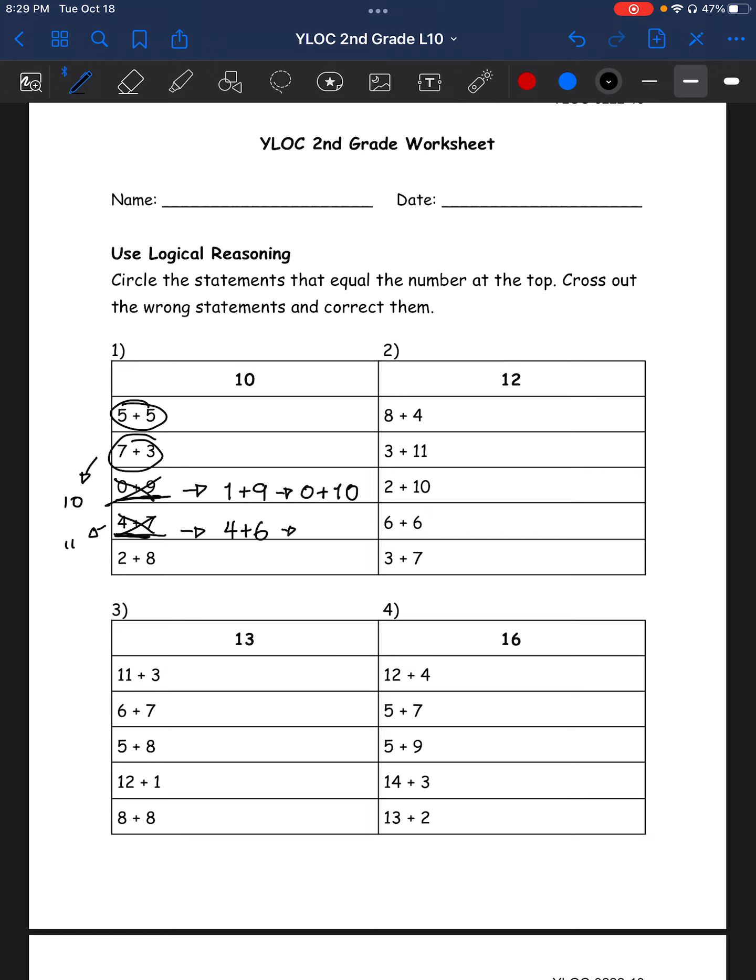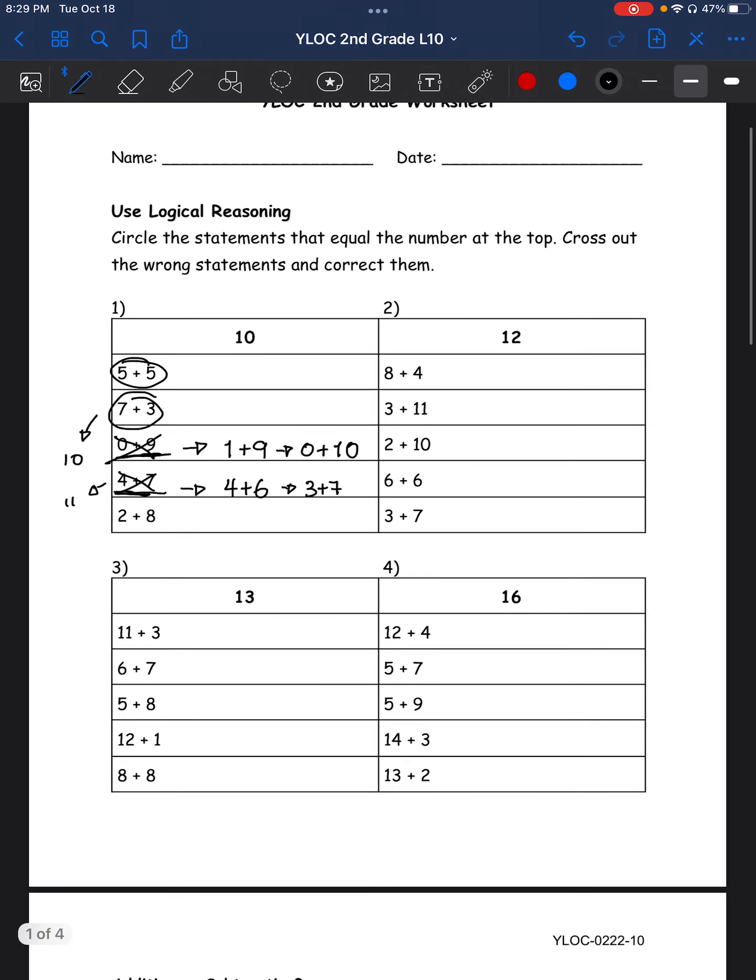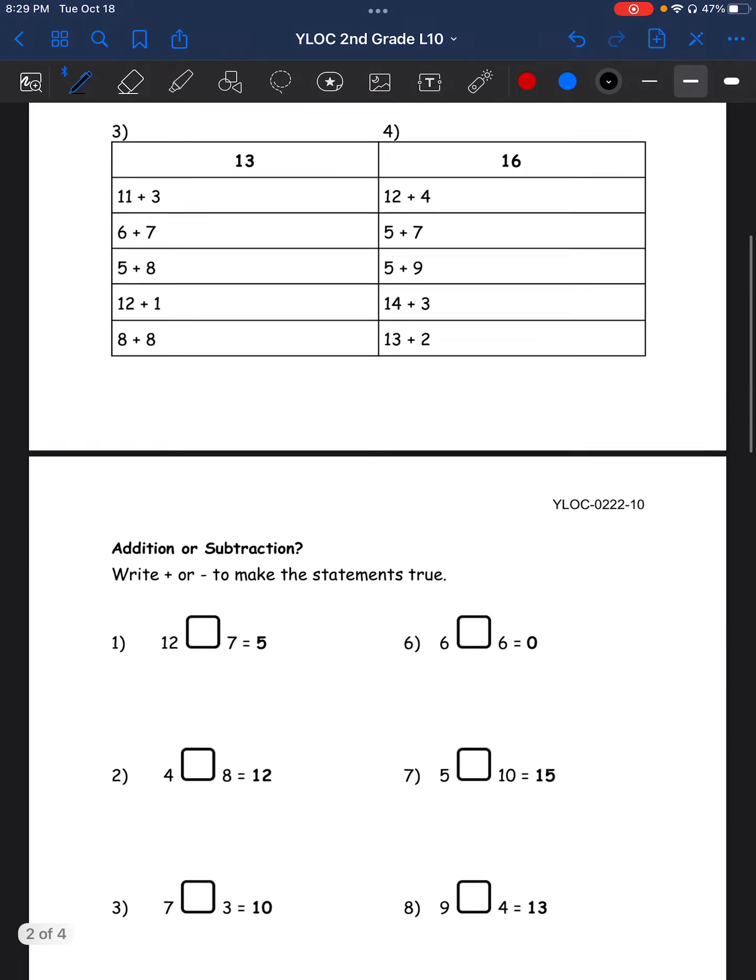This one can also be 0 plus 10. And of course, this one can also be 3 plus 7. Let's do the last one, 2 plus 8. This is equal to 10, right? So then we're supposed to circle it. So do the same thing for the rest of these problems. And let's go on to the next part.